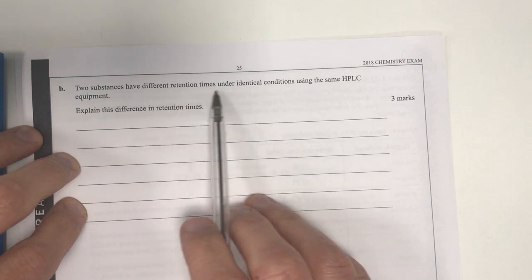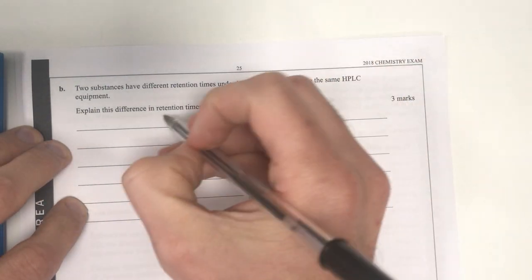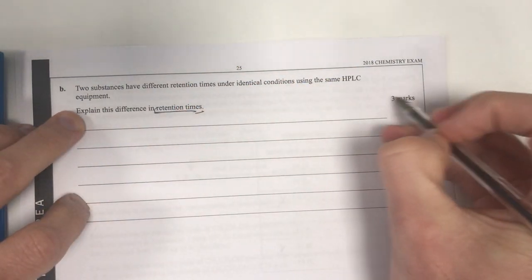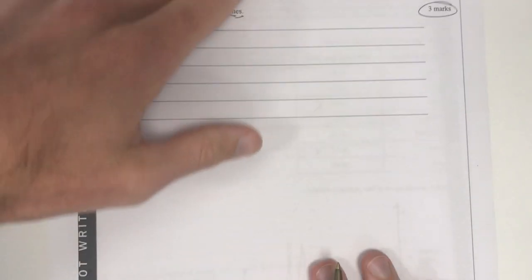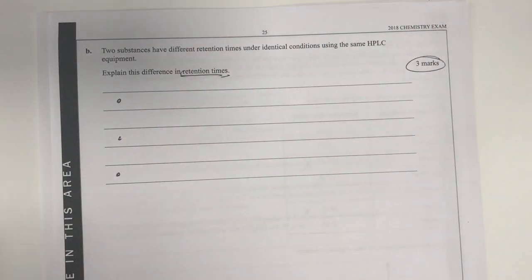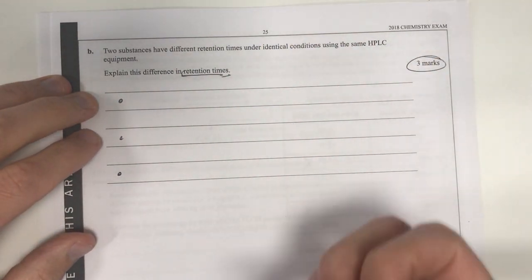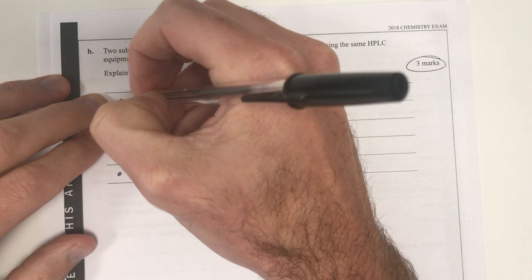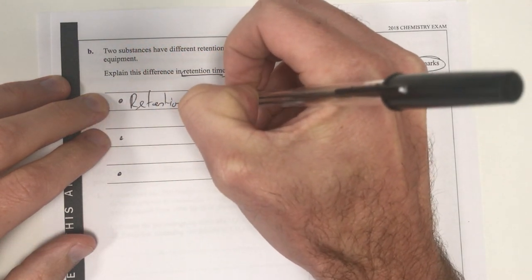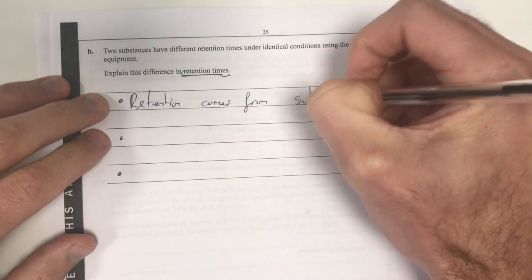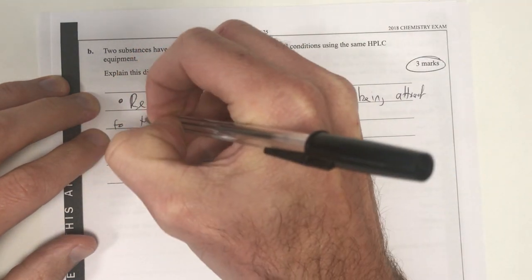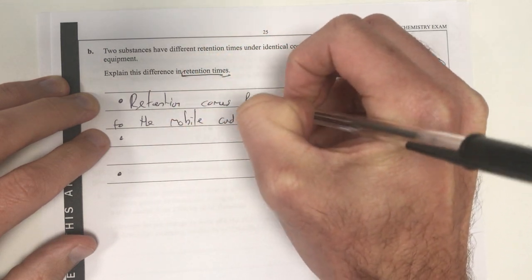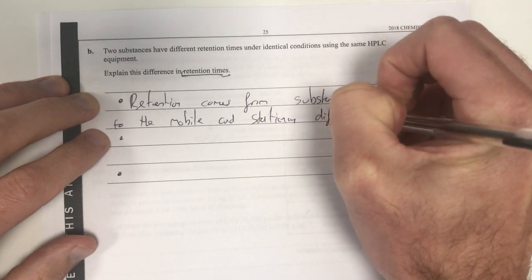Part B, let's have a look at this one. We've got two substances having different retention times under identical conditions. Explain the difference in retention time. So why do we get different retention time? This question is an explained question. It's worth three marks. I'm going to put three dot points straight away. I've got a whole bunch of spare paper here as well, which is nice to do some working out if I need it.